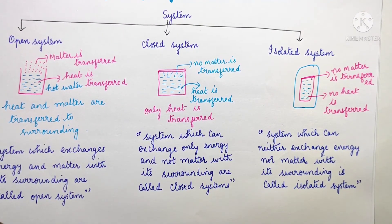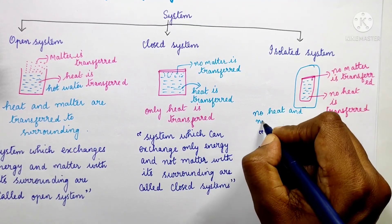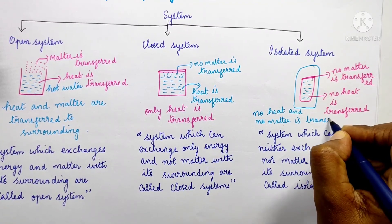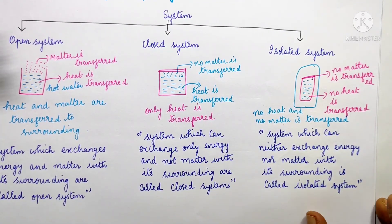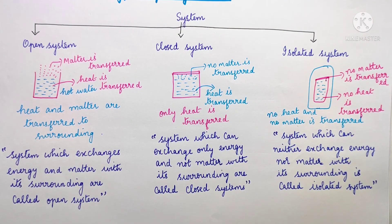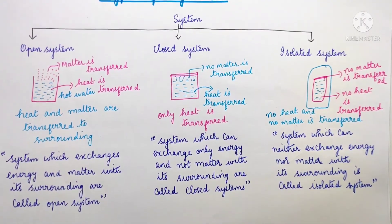In this case, no heat and no matter is transferred. So these are the three different types of systems: open system, closed system, and isolated system. It is easy to remember. Thank you.